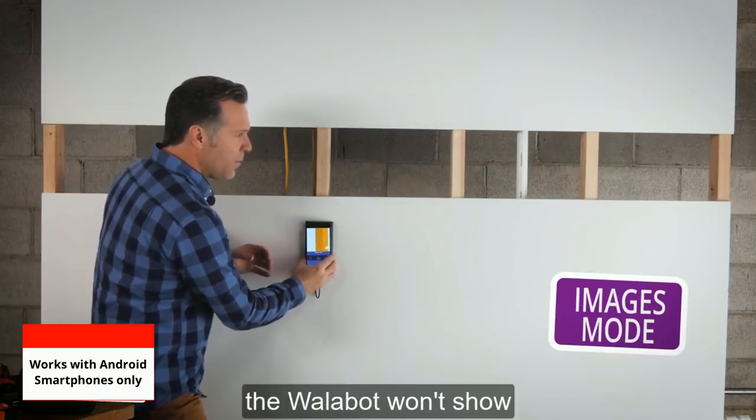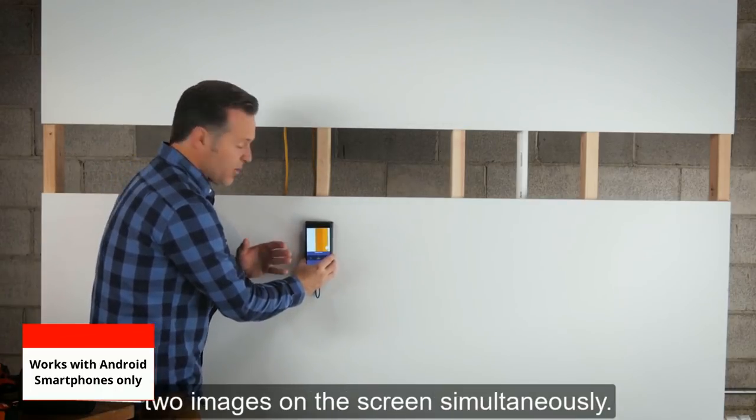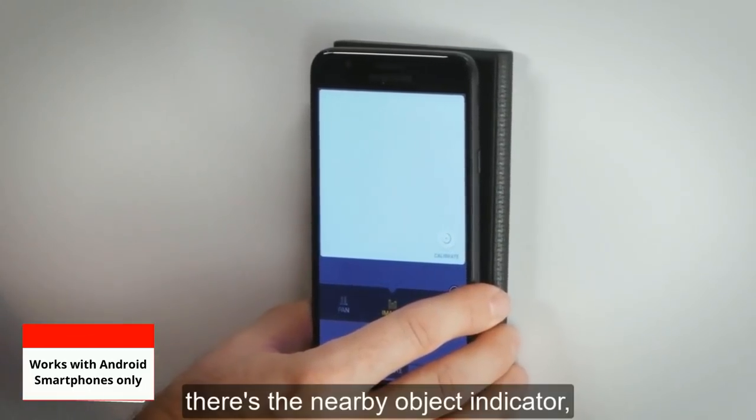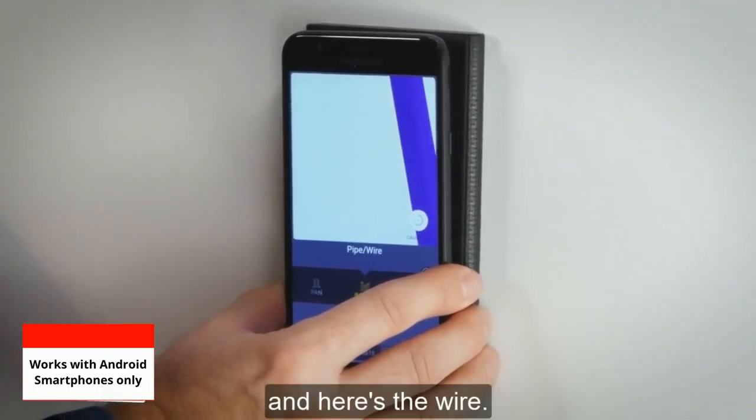The Walabot won't show two images on the screen simultaneously. Instead, there's the nearby object indicator, and here's the wire.